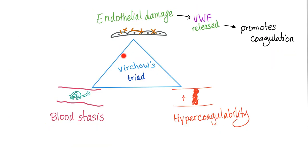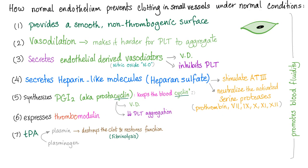The endothelium is also involved in Virchow's triad — endothelial damage, blood stasis, and hypercoagulability. Endothelial damage releases von Willebrand factor, which sticks to platelets and promotes coagulation. So how does the normal endothelium prevent clotting in small vessels under normal conditions?